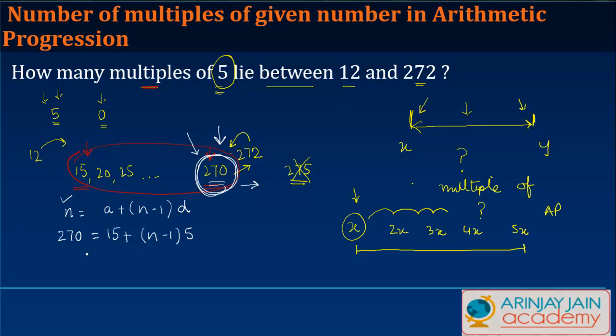Simply solving this, you will get 270. Take 15 to the other side: minus 15 equals 5n minus 5. If I take this 5 also to the other side, I get plus 5 over here. So you get 260.